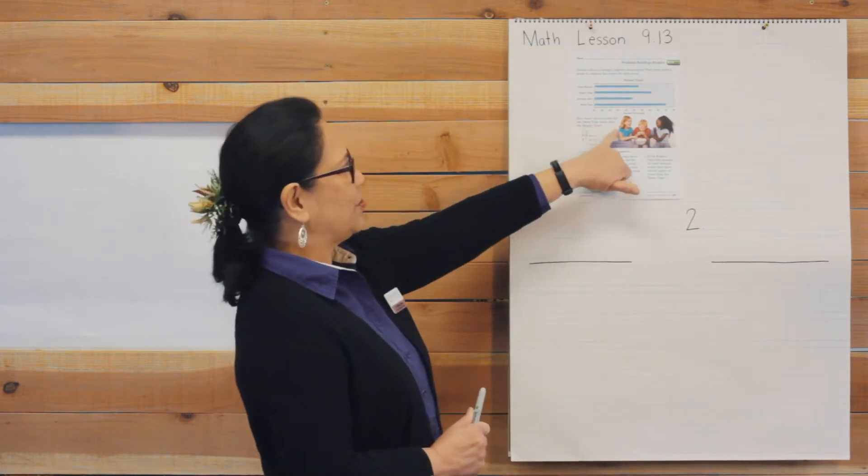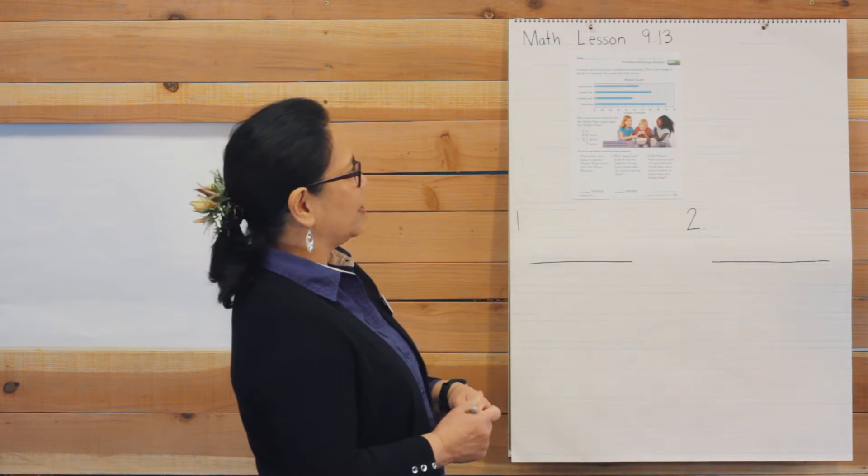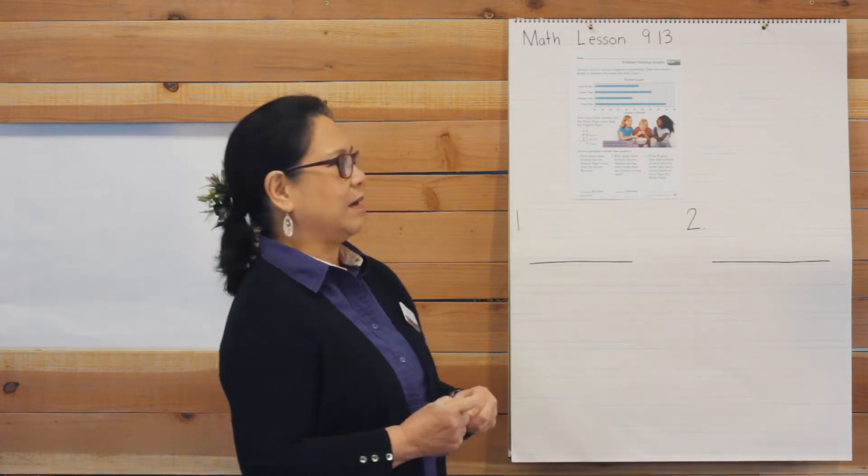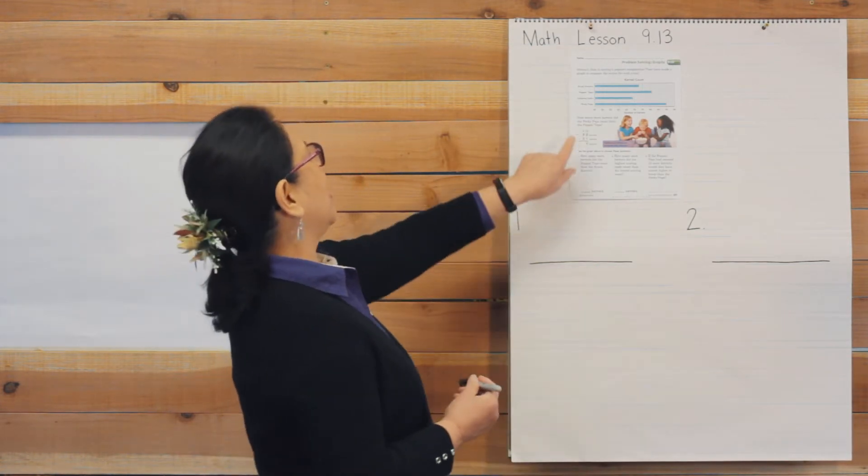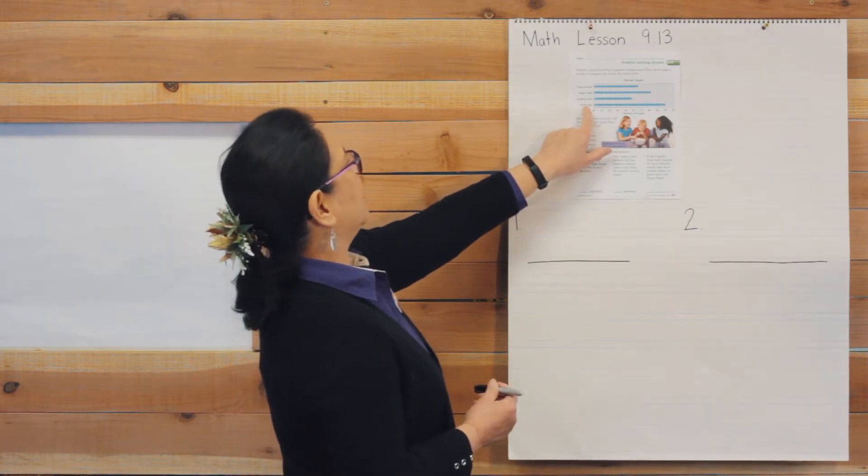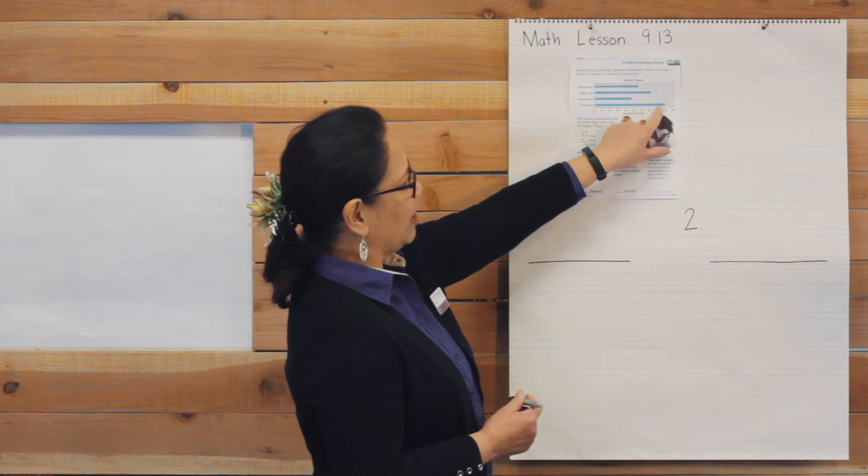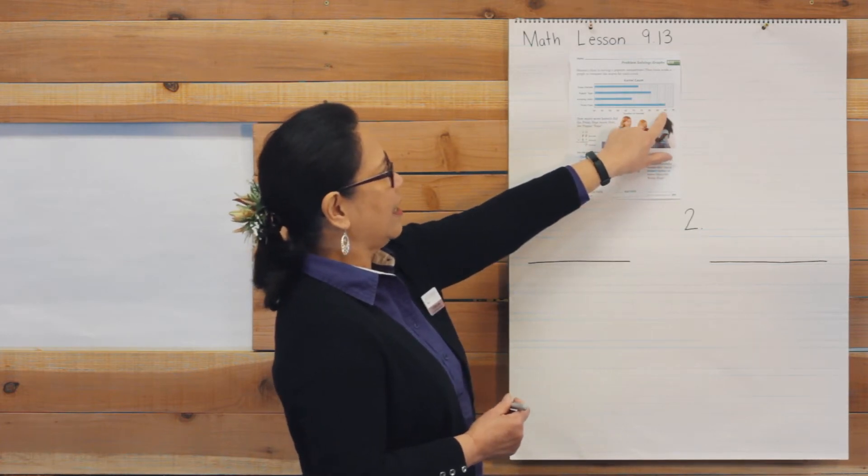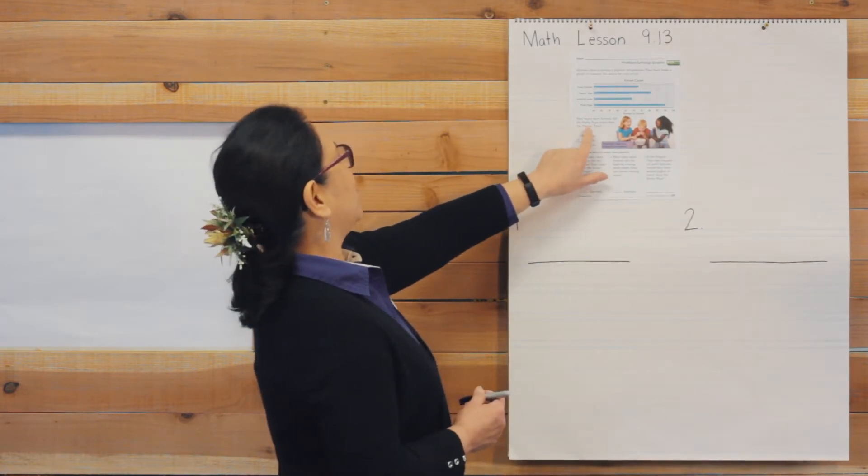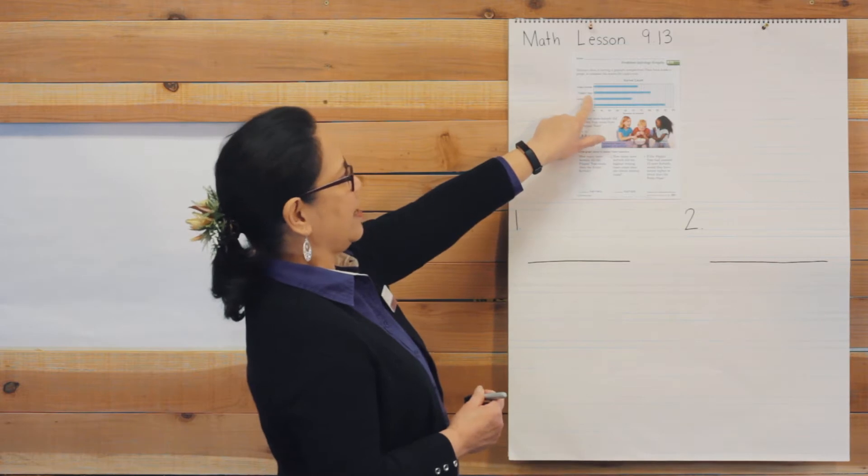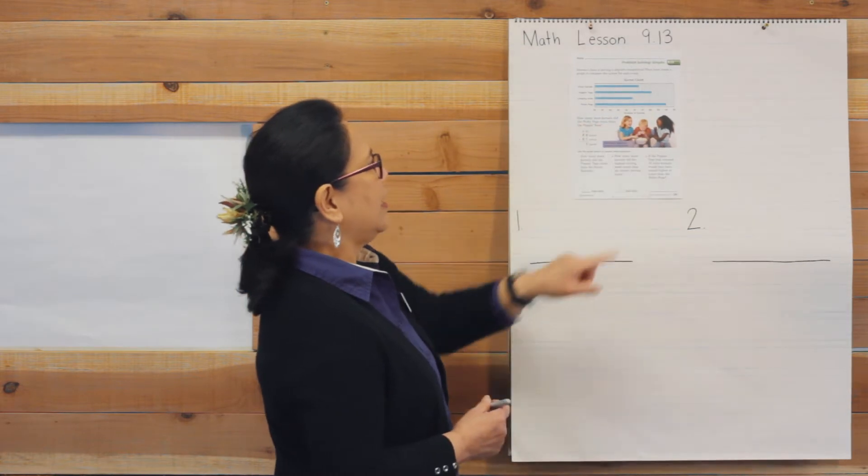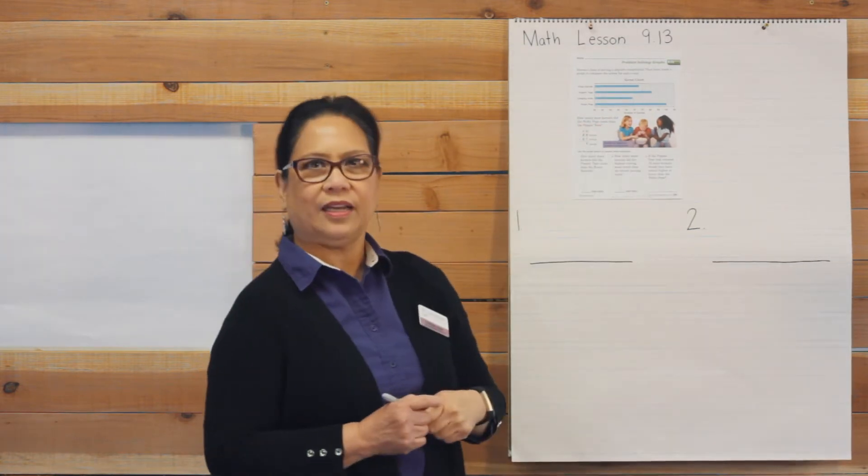The first question is, how many more kernels did the porky pops count than the porky pops? So first we have to find out how many kernels did the porky pops make? It looks like this is porky pops. You look all the way to the end of that blue line and it looks like they have 90 kernels. Then if we look at the porky line, then go down. And it looks like they have 81 kernels.